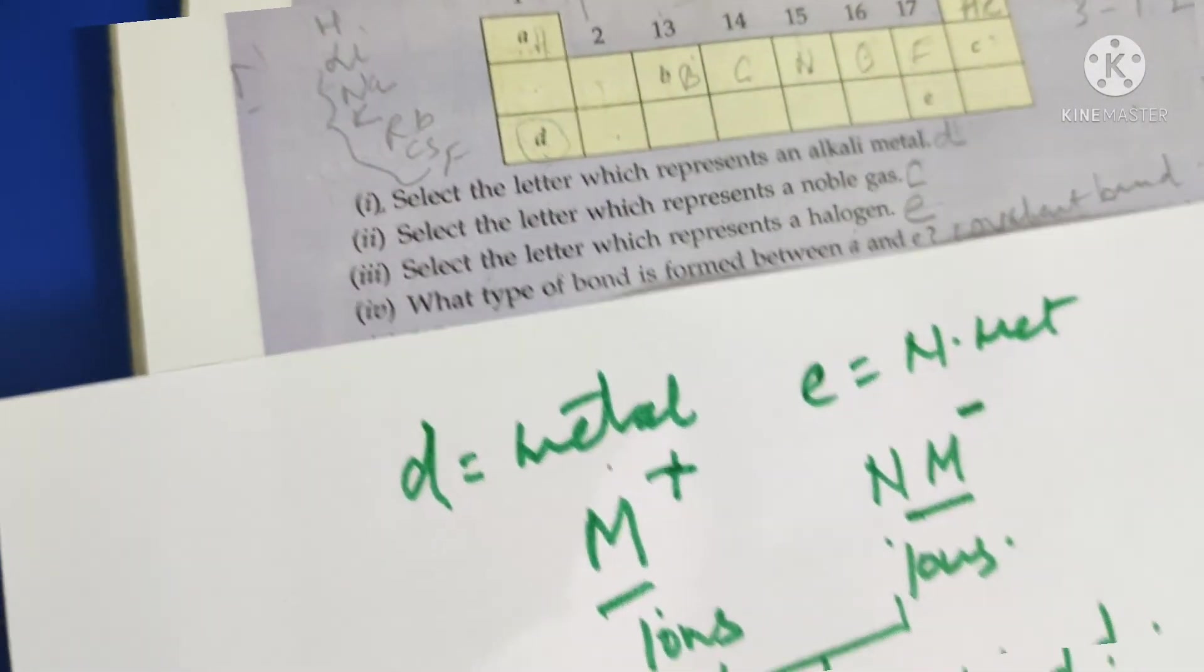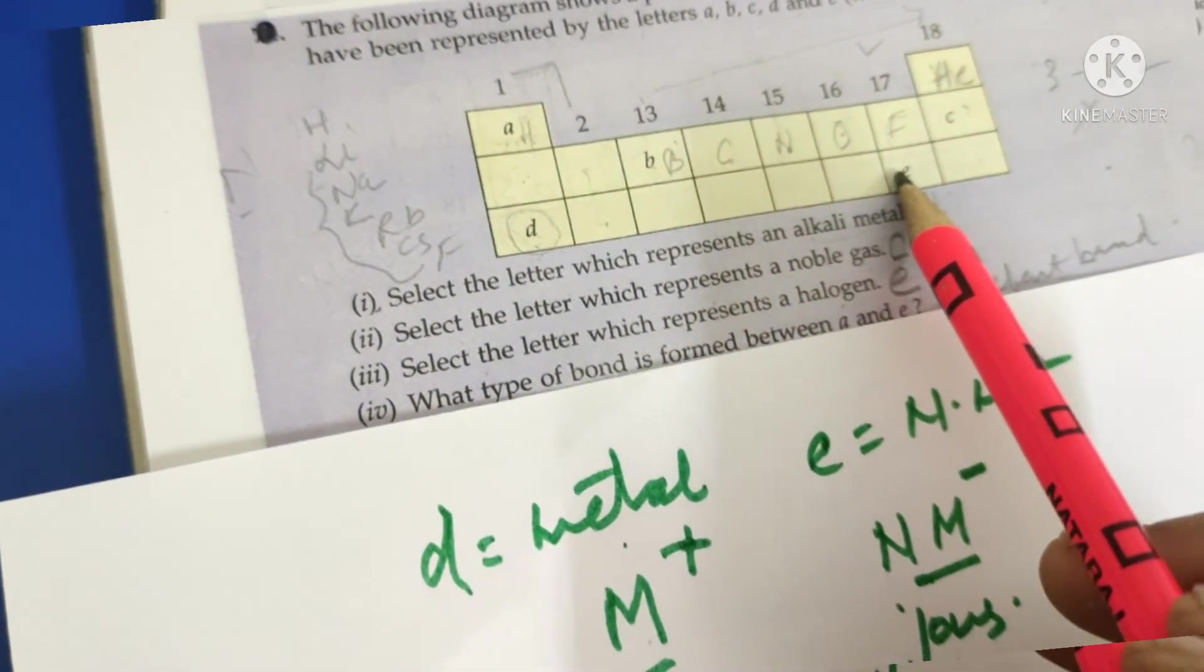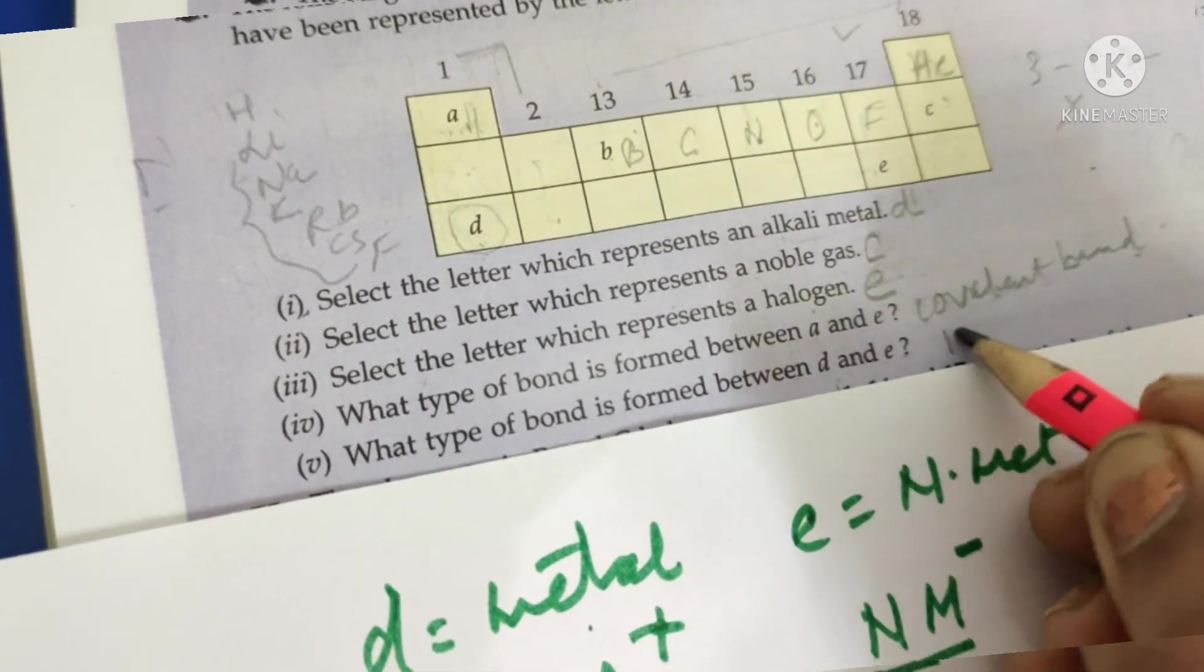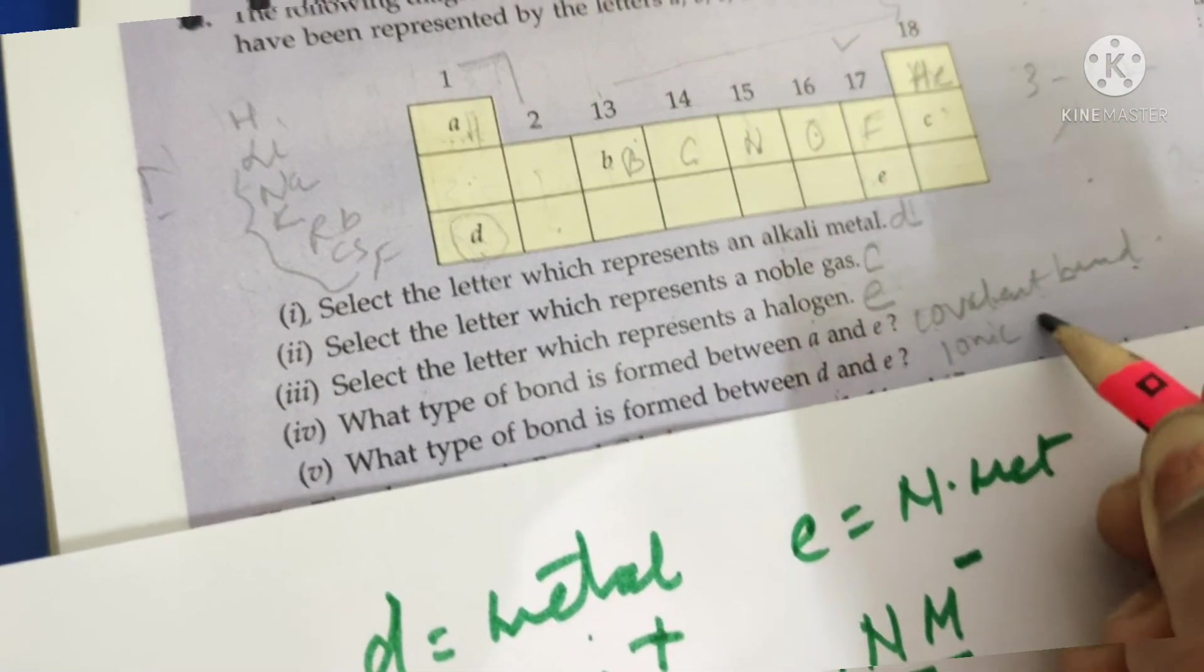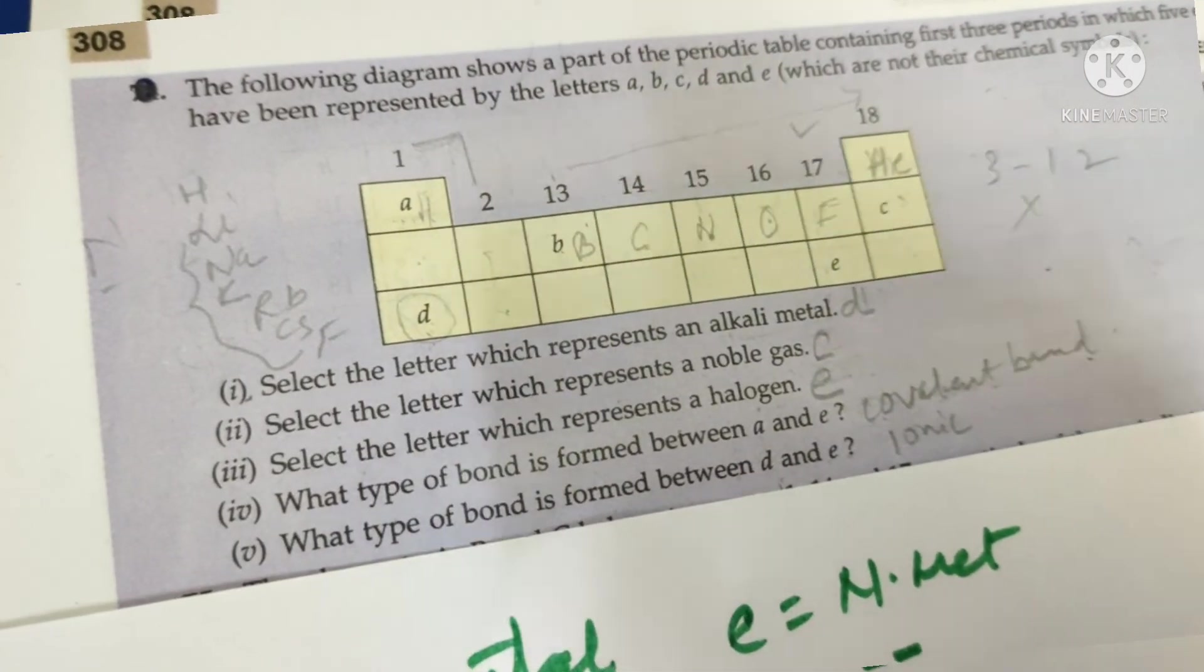The bond which is formed by the metal and non-metal is always which type of bond? That is ionic. I hope it is clear to you. Very easy questions, they will come. Now, come to the next question.